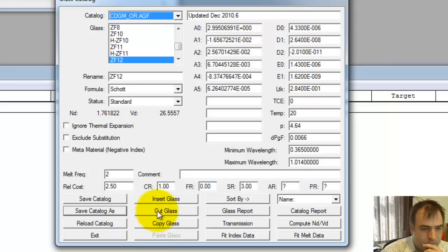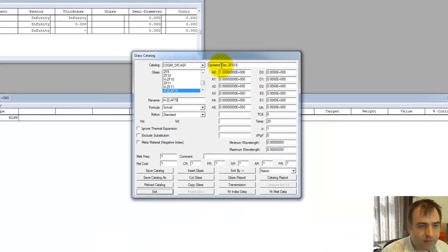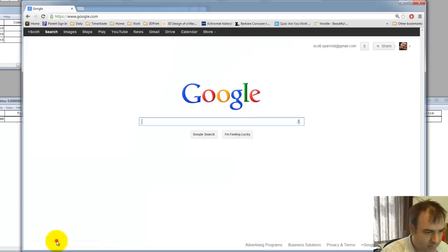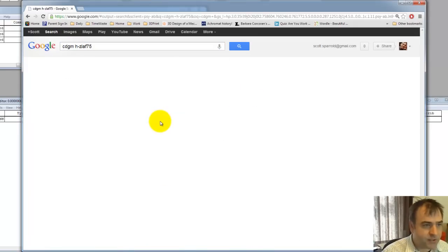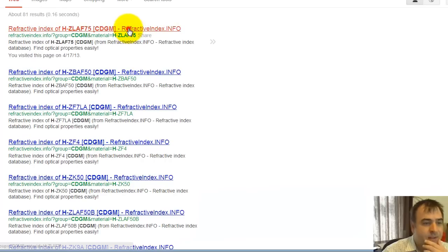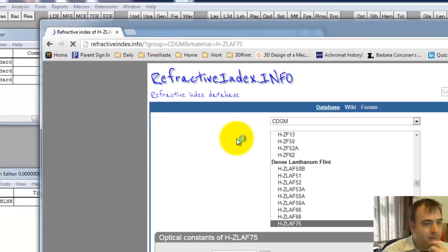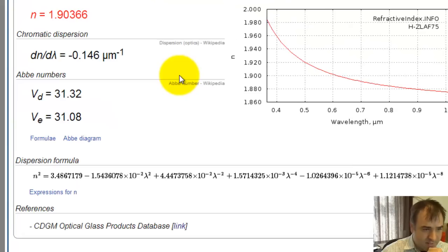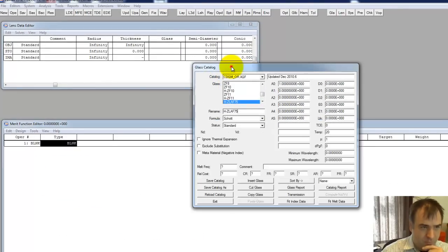We're going to add a new glass, insert glass. We're going to do H-ZLAF75. I'm going to find it on CDGM H-ZLAF75. This particular glass formulation is not available on CDGM's website. I did find it on refractiveindex.info. Here it is. We can get index data or the dispersion formula.